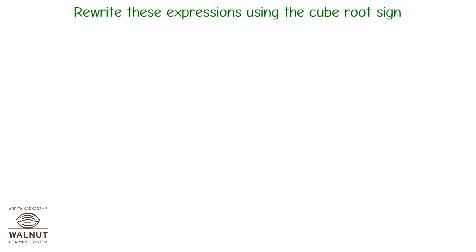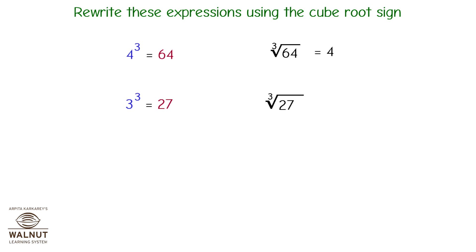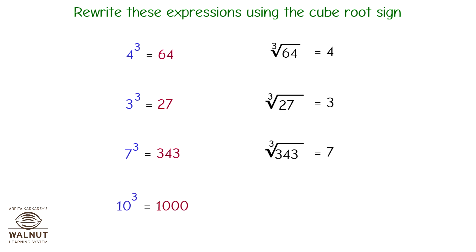Rewrite these expressions using the cube root sign. 4 cube is equal to 64; hence, the cube root of 64 is 4. 3 cube is equal to 27; therefore, the cube root of 27 is 3. 7 cube is equal to 343; hence, the cube root of 343 is 7. 10 cube is equal to 1000; hence, the cube root of 1000 is 10.